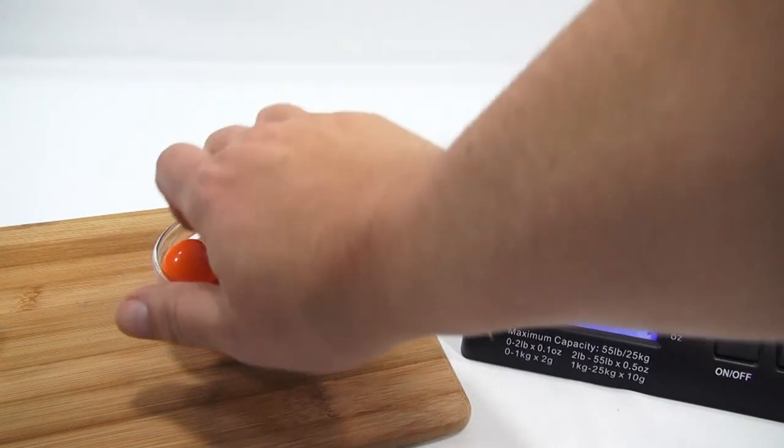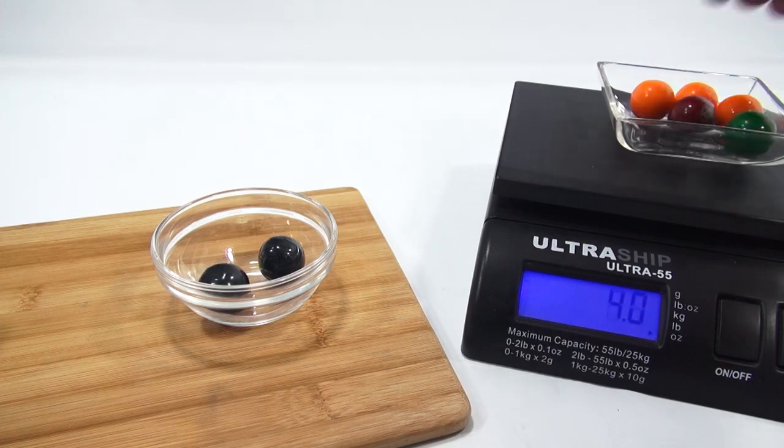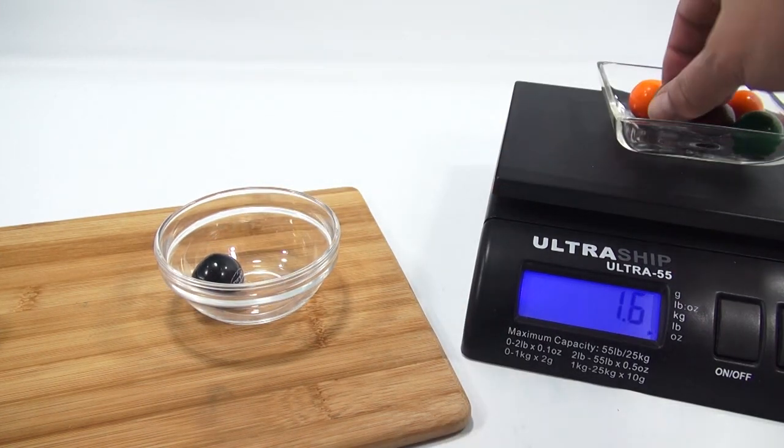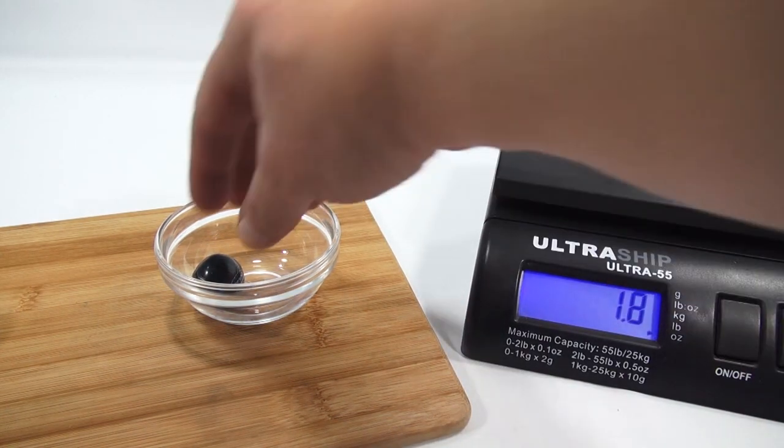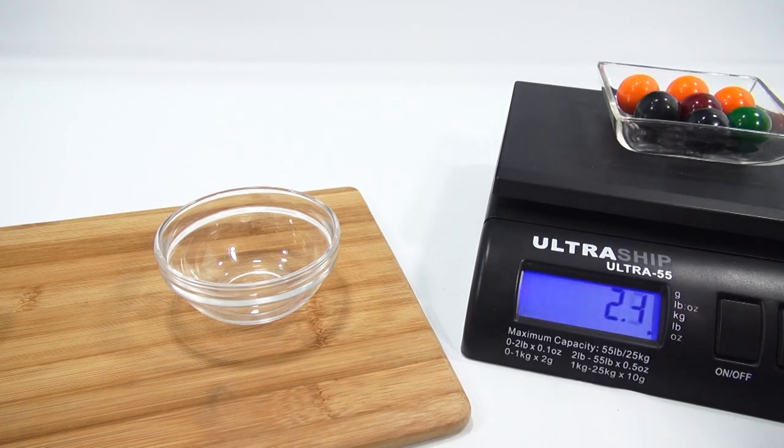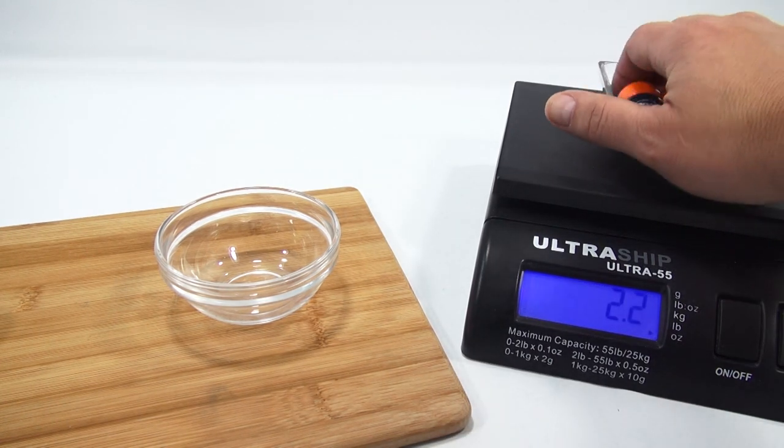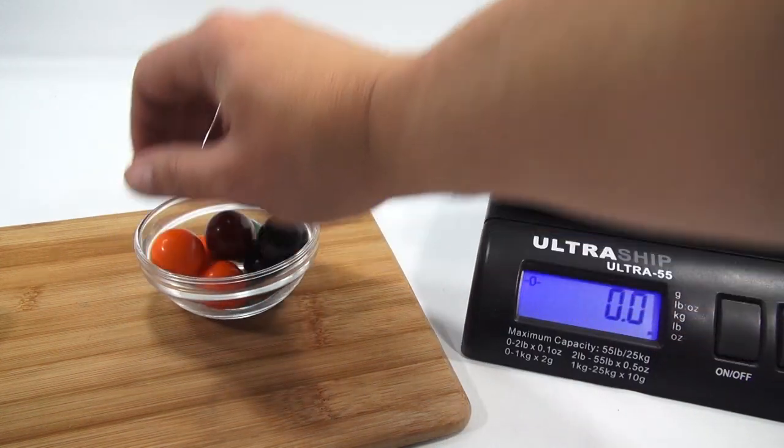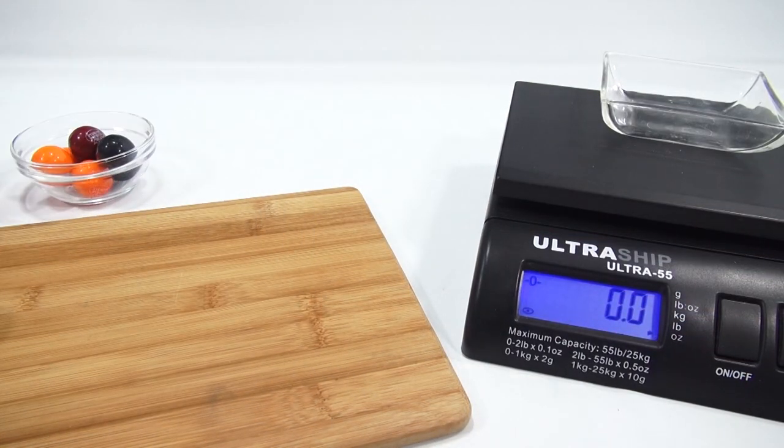So let's see, what gets two ounces with this? That is two, four, six, seven one-inch gumballs fit into one of these giant gumballs. Seven of those.